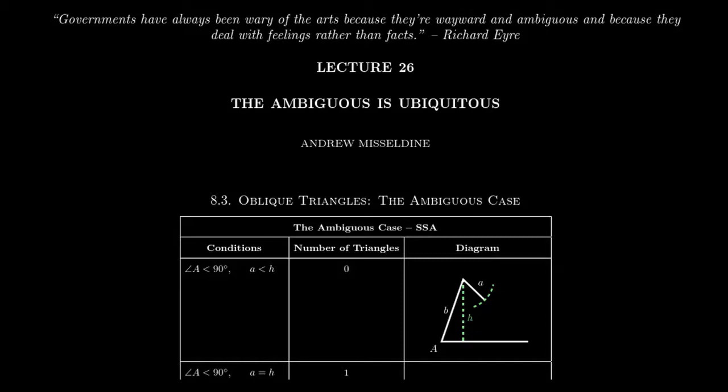In Chapter 8 in our lecture series, particularly in Lectures 24 and 25, we've been using the Law of Sines and the Law of Cosines to help us solve various settings of oblique triangles. We use the Law of Sines for angle-side-angle or angle-angle-side criteria, and the Law of Cosines to solve side-side-side or side-angle-side situations.